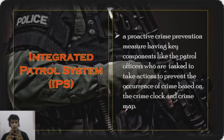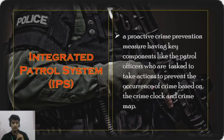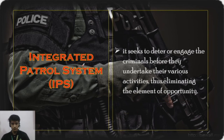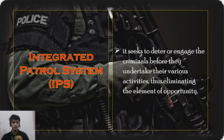We now have the so-called Integrated Patrol System, or IPS. It is a proactive crime prevention measure with key components including patrol officers tasked to take actions to prevent the occurrence of crime based on the crime clock and crime map. The application of crime analysis is central here. Its purpose is to deter or engage criminals before they undertake their various activities — eliminating elements of opportunity. IPS is primarily a preventive measure.